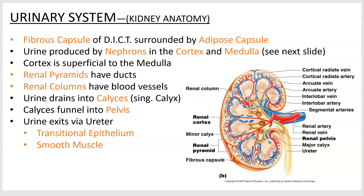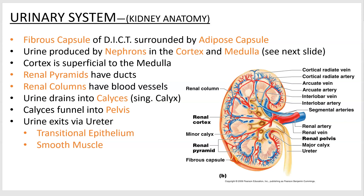Then you go to the cortex. The cortex is the layer that goes from the outside to this part — all of this area I'm circling right here. Just inside of that is the medulla. The cortex and the medulla are where you produce the urine.